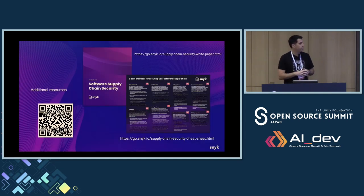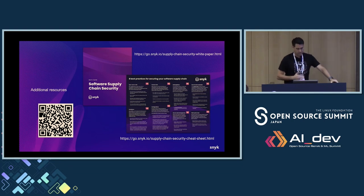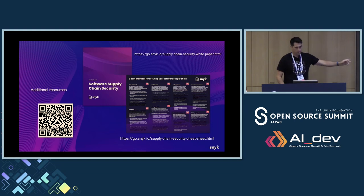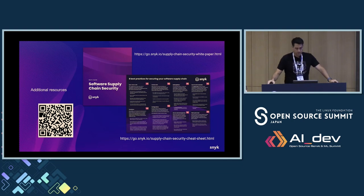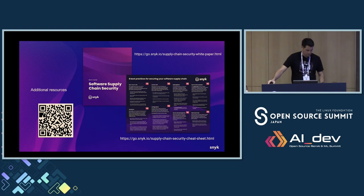That's all I had for you. Sneak has a white paper on software supply chain security, and also the eight best practices for securing a supply chain — you can find it via the QR code. Any questions? I think I'm pretty good for time — about five minutes.